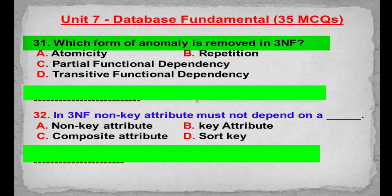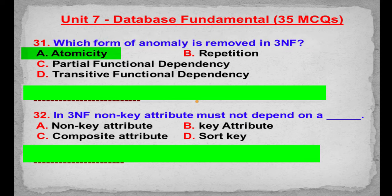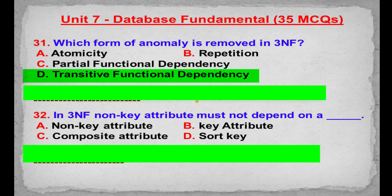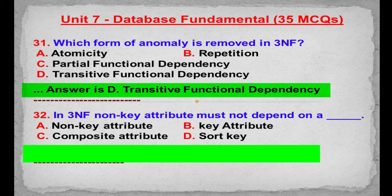MCQ number 31: Which form of anomaly is removed in 3NF? Option A: Atomicity. Option B: Repetition. Option C: Partial functional dependency. Option D: Transitive functional dependency. Correct answer is Option D: Transitive functional dependency.